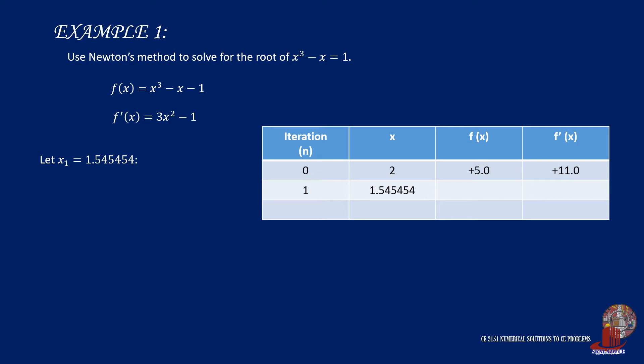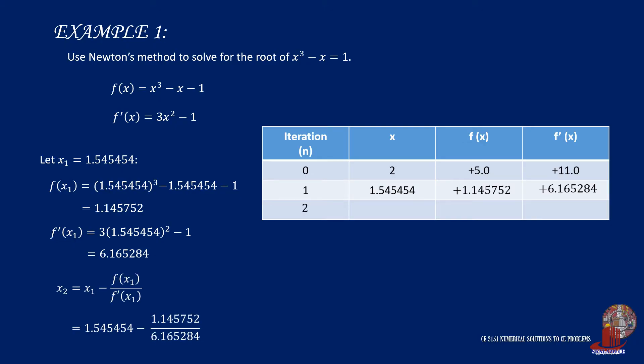Plug the value of x sub 1 into the two functions, and function of x would reflect positive 1.145752. Whereby, the value of its differential gives positive 6.165284. Use these values to identify the next value of x, and that is 1.359615. This is x sub 2.